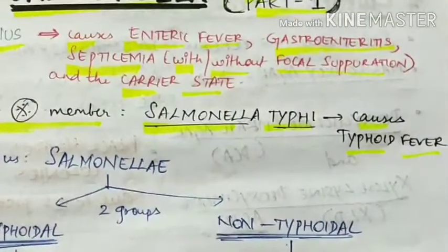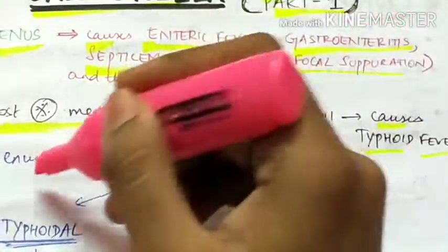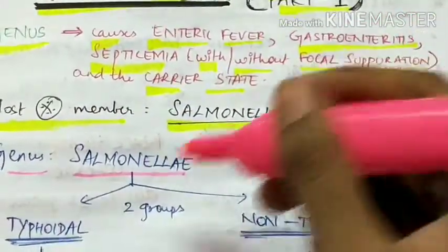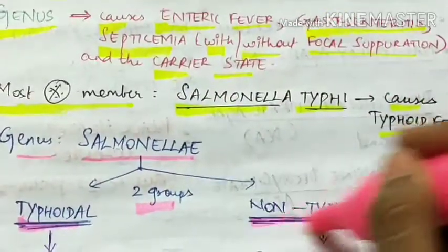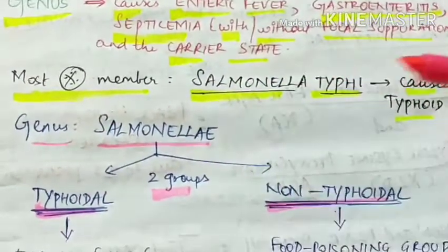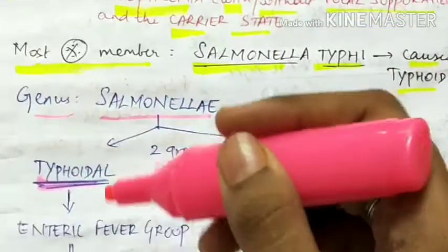The genus Salmonella is divided into two groups: typhoidal Salmonella and non-typhoidal Salmonella. The typhoidal Salmonella includes enteric fever group.